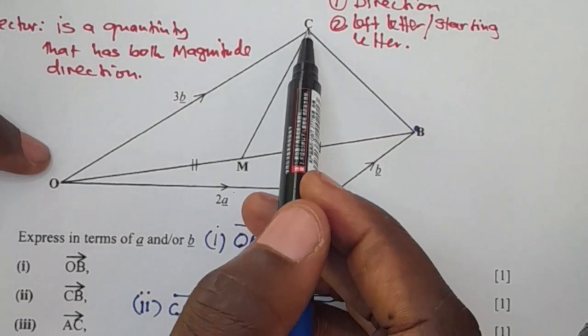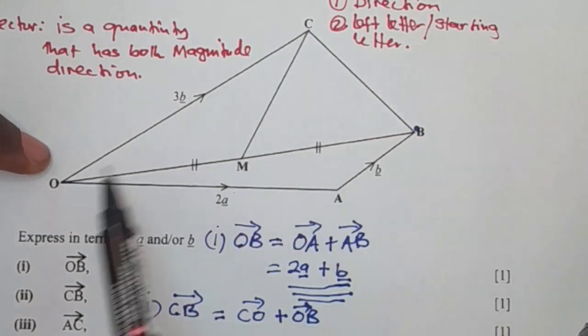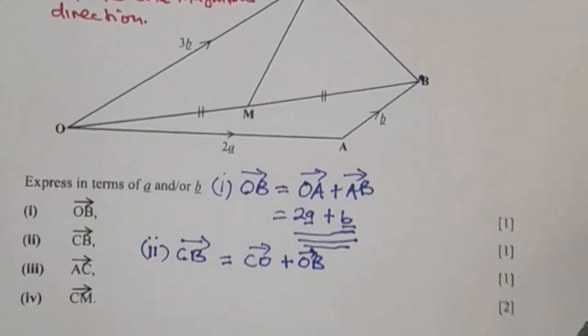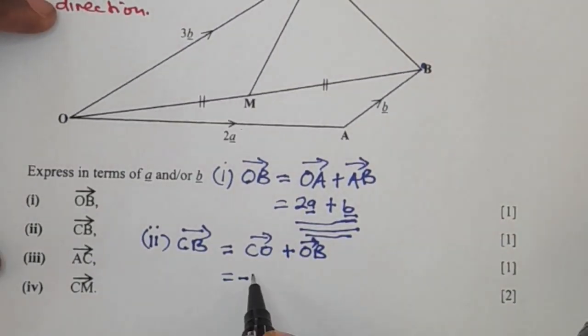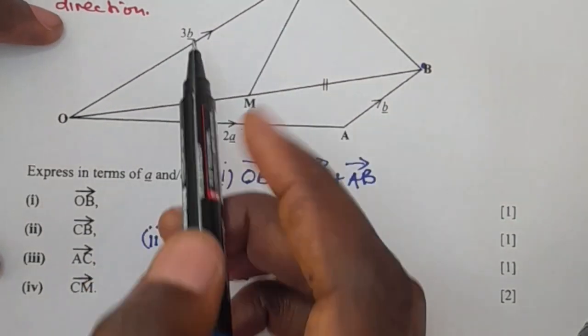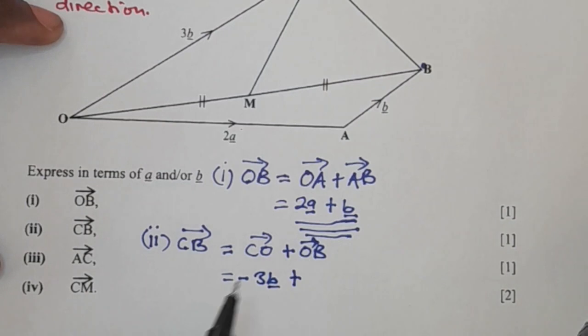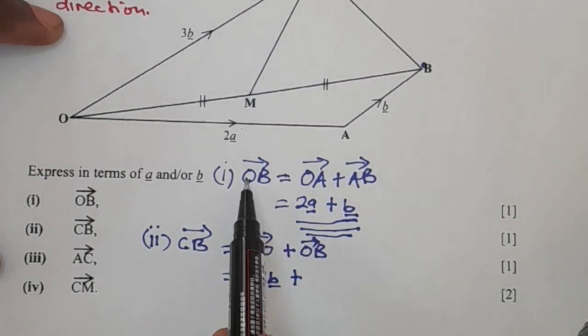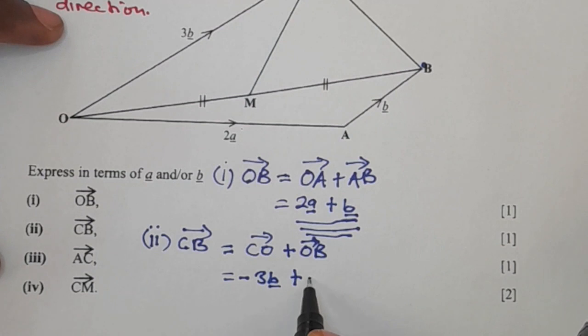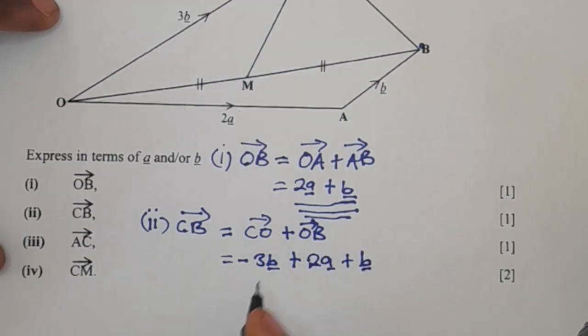So meaning we're going to have a negative vector since we are moving against the direction of the vector. So CO is going to be negative 3b plus OB. OB, we found that OB is 2a plus b. So you're going to have 2a plus b. So now we can simplify this by collecting like terms together. You can see that this is like to that. They have Bs. So you're going to have negative 2b plus 2a.